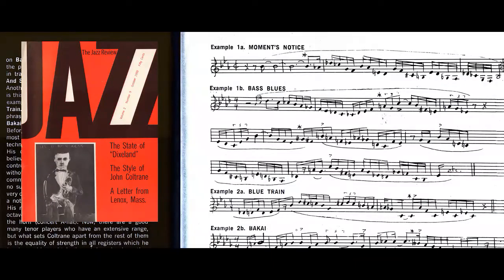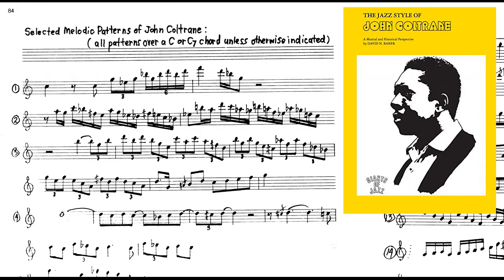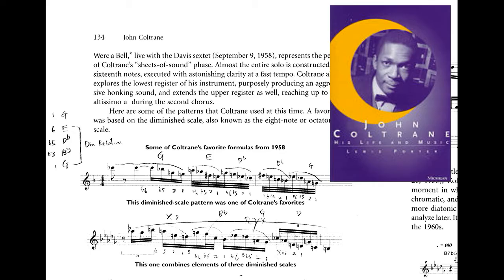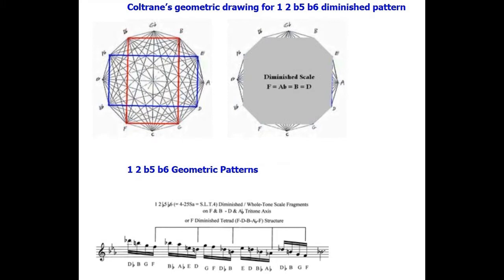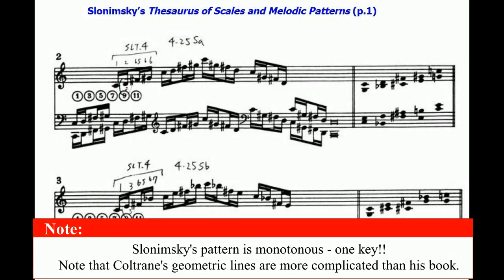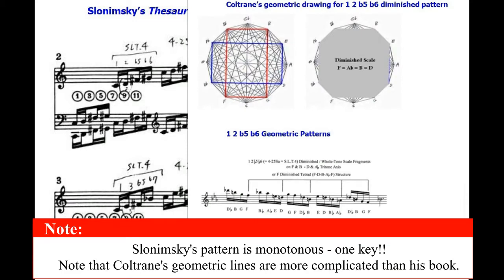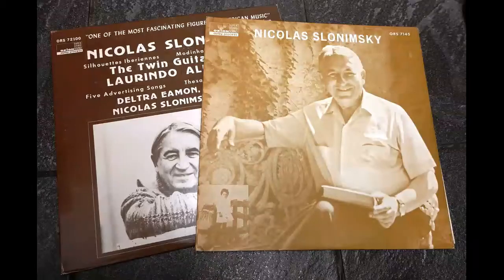Let me start with Coltrane's phrasing, which I call the geometric pattern: 1, 2, flat-5, flat-6. This pattern is quoted by Ajita Kauno, David Baker, and Dr. Louis Porter. Here's my analysis using the subset of limited transposition. I applied it to Coltrane's geometric drawing. You can find this 1, 2, flat-5, flat-6 pattern in Slonimsky's book, but Slonimsky's pattern is written in one key. Please note that Coltrane's geometric lines are more complicated than his book.